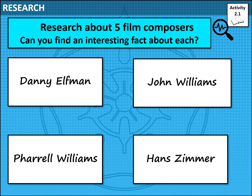Moving on to our main point of today's lesson: looking at film composers. A film composer is somebody who writes the music for a film. There are different types of music in a film — music that goes on in the background that you're largely unaware of, and music that really enhances what's going on on screen. I'd like you to research five film composers and find interesting facts about any of them. I've listed four to give you a head start: Danny Elfman, John Williams, Harrell Williams, and Hans Zimmer. An interesting fact — at my old school, Hans Zimmer's Pirates of the Caribbean was used as changeover music, which haunts me to this day. Pause the video now and do your research.